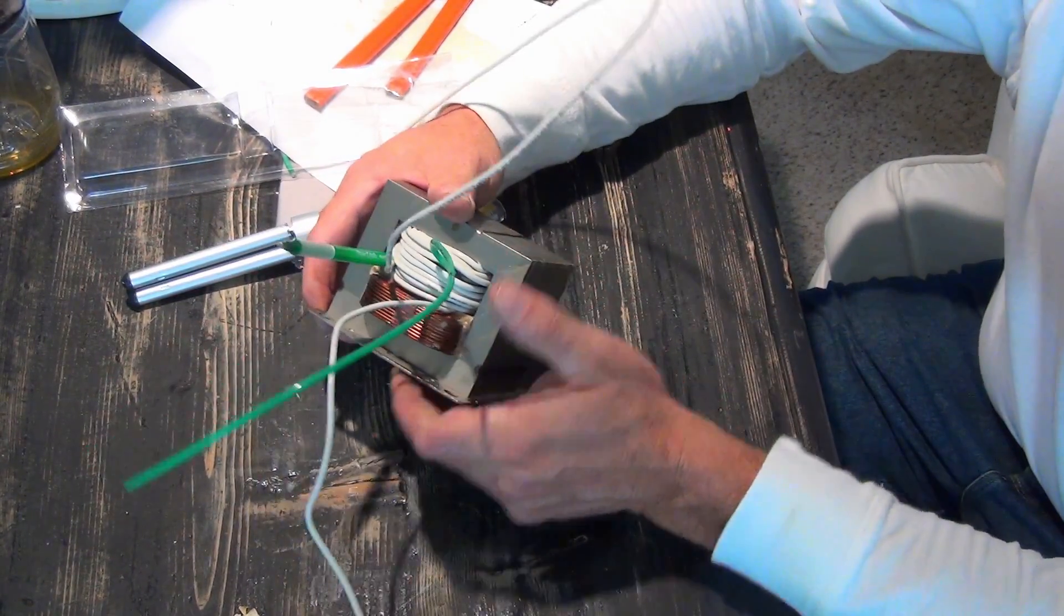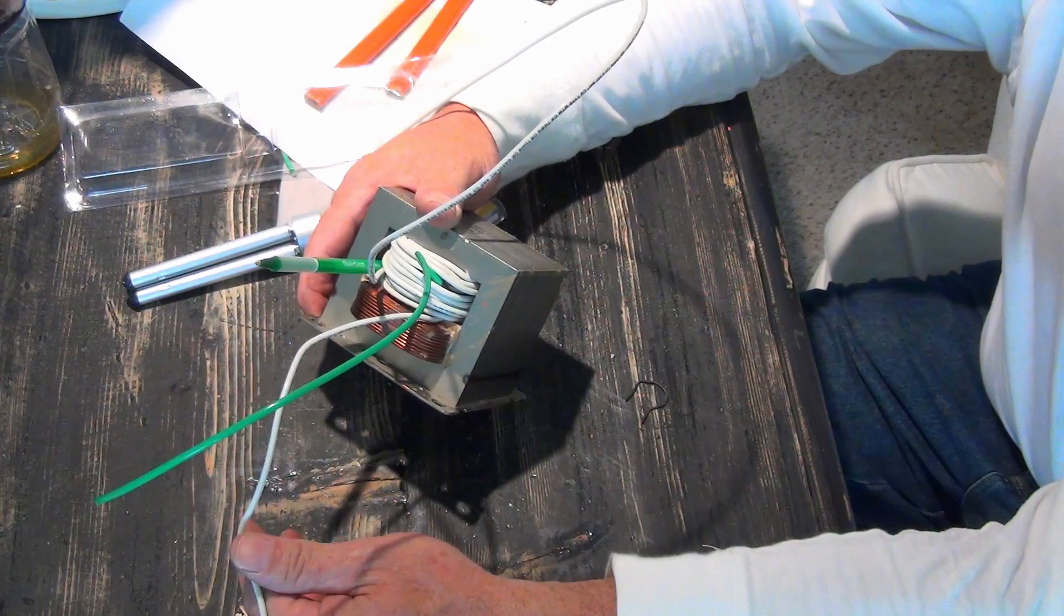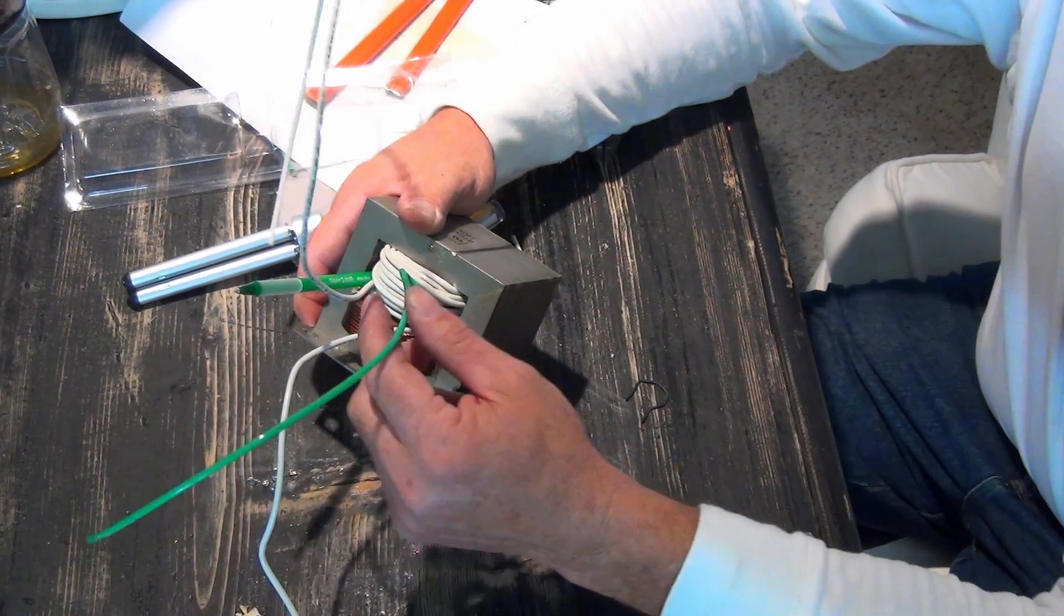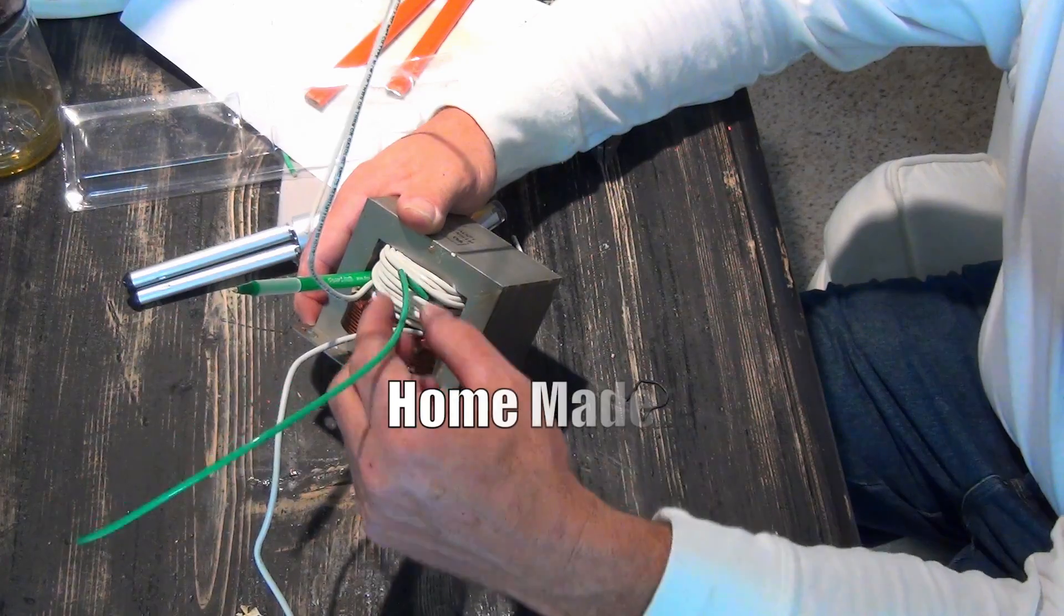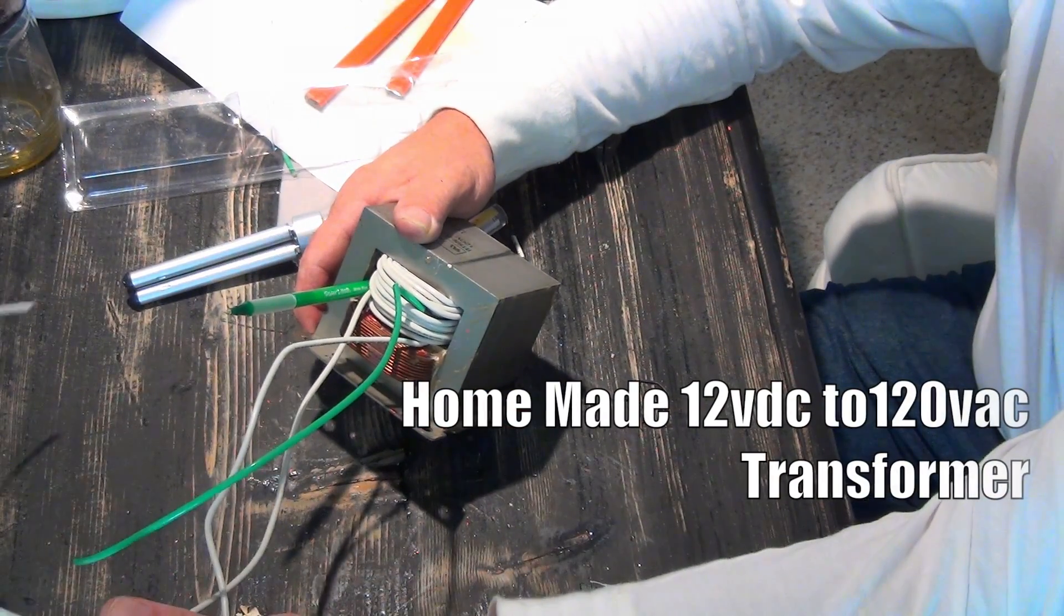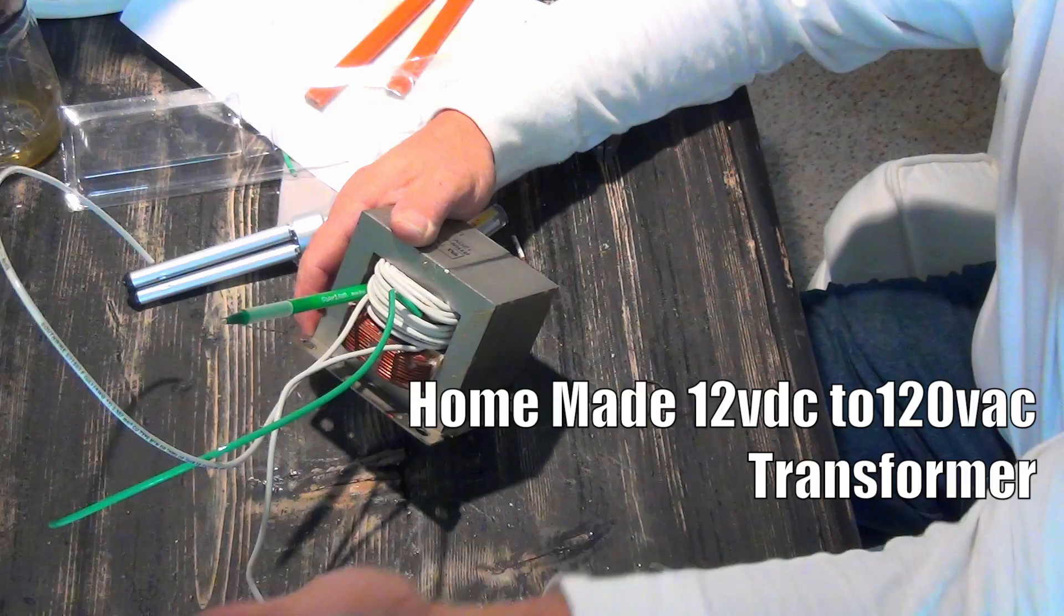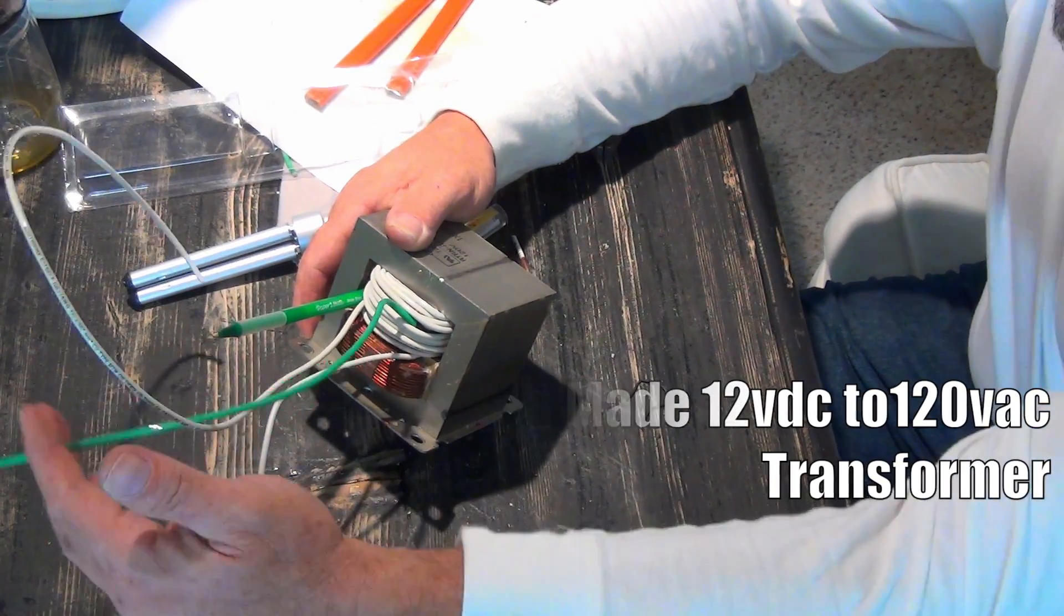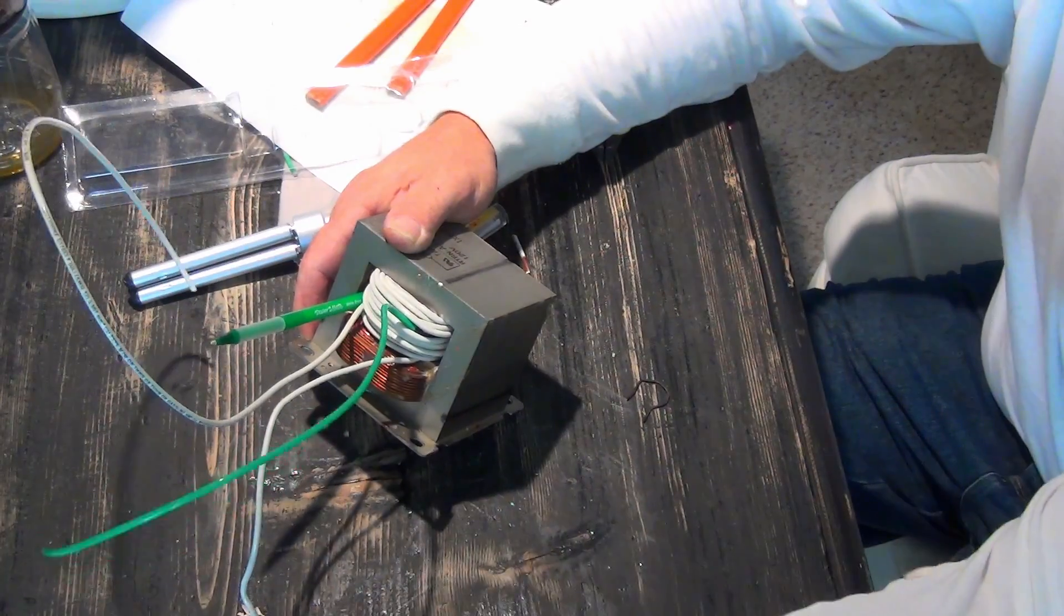So we've got our center tap, our outer tap, and we have our mid tap. So these two will both go to the heat sink and resistors before they hook up to the neutral portion or the negative. And this will be my positive that goes straight to the battery.